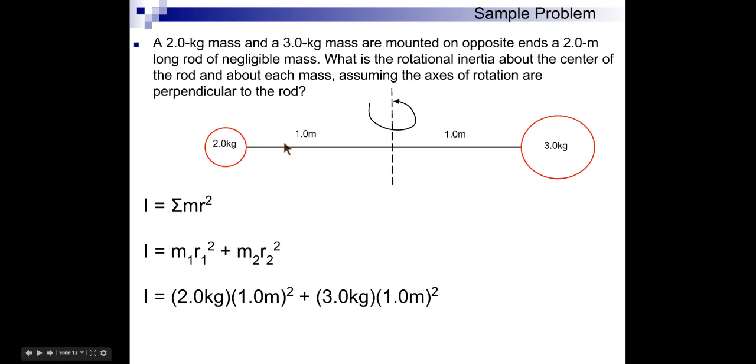So, we've got two masses here, so we've got two MR squareds. And then we just do the math, and we find that the rotational inertia about the center here is five kilogram meters squared.